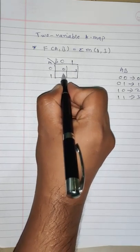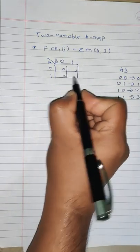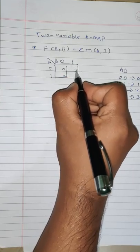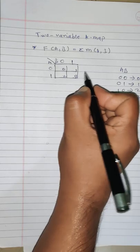For the next cell, a equals 1, b equals 0, so 1 0 is 2. And for this cell, a equals 1 and b equals 1, so 3. The cell values are 0, 1, 2, 3.